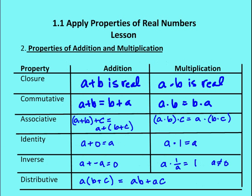So let's move on and talk about the properties of real numbers. There are six different properties, one for addition and one for multiplication.